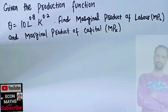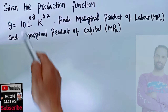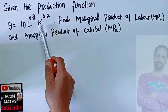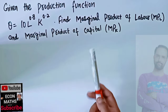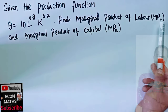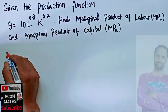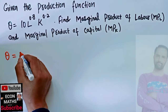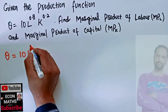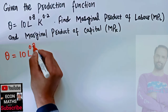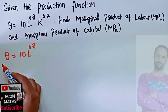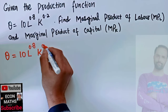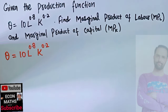How to find marginal product of labor and capital. Given the production function Q = 10 × L^0.8 × K^0.2, we need to find the marginal product of labor and marginal product of capital. Q denotes output, L denotes units of labor, and 0.8 is the exponent representing the output elasticity of labor. K denotes units of capital, and 0.2 denotes the output elasticity of capital.